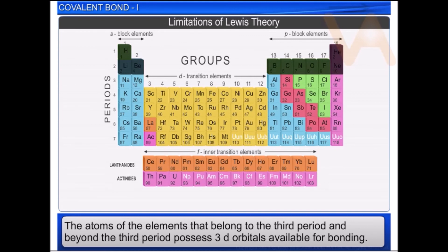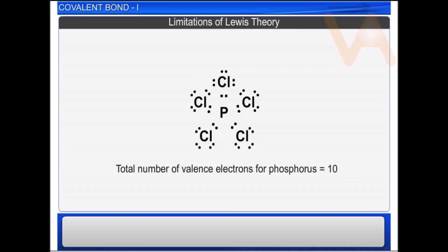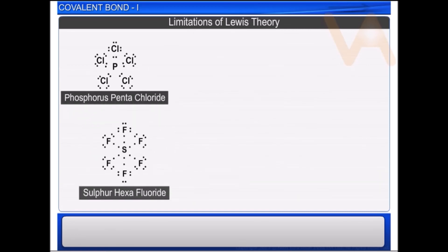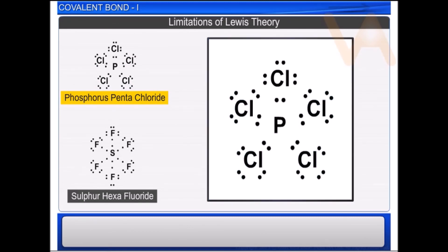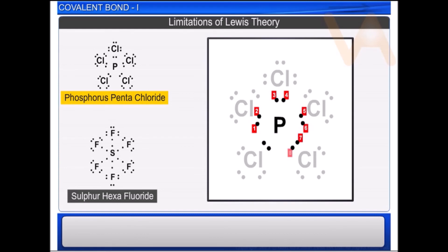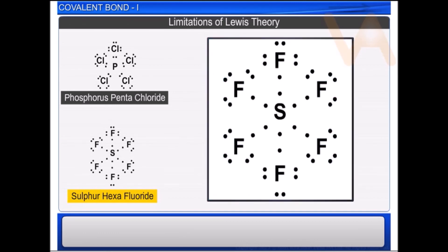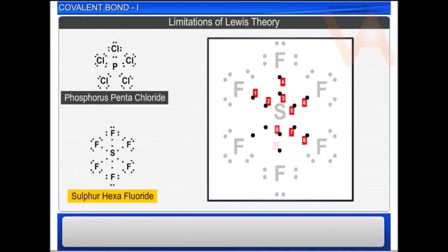The atoms of elements that belong to the third period and beyond possess d orbitals available for bonding. Hence, most compounds formed from them possess more than eight electrons around their central atoms — this is called expanded octet. Therefore, the octet rule is not applicable for molecules such as phosphorus pentachloride and sulfur hexafluoride. In phosphorus pentachloride, phosphorus — the central atom — has ten electrons in its valence shell. In sulfur hexafluoride, sulfur is the central atom and it has twelve electrons in its valence shell.